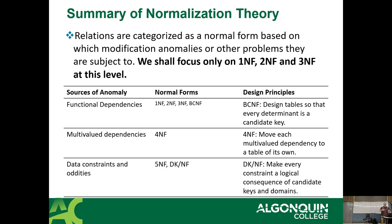Honestly, anything past fourth normal form falls into what I like to call 'pocket protector land.' It's very rare you ever need to worry about fifth normal form — it usually comes up with really weird edge cases. The cool thing is that most of the time when things are in third normal form, they're often automatically in Boyce-Codd, fourth, and fifth as well. Essentially, once you have no more anomalies in your data structure, you're basically covering every normal form, not just the first three.